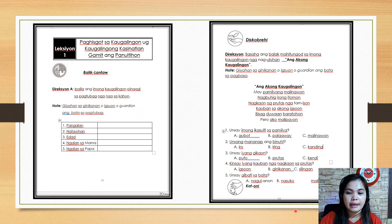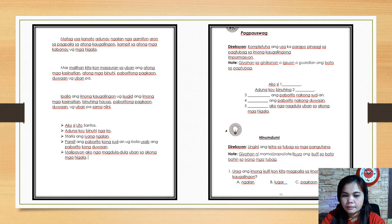Next number five: unsay gibibati sa bata - what is the feelings of the kid? A: magul anon or sad. Letter B: nasuko or angry. Letter C: malipayon or happy. So next, encircle the letter of your correct answer. Number one: what do you say when you introduce yourself?